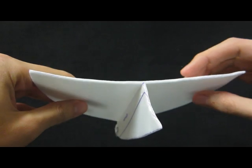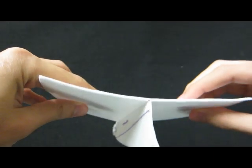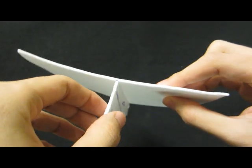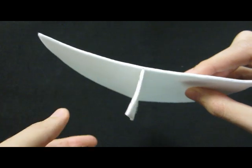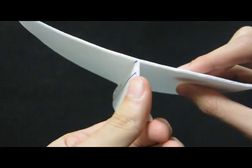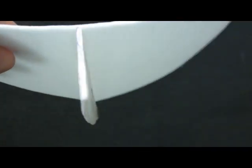You can then bend the wings upward slightly, like this, in order to produce a stable flight in a straight line. Bend the tail this way if you want the glider to go left, or this way if you want the glider to go right.